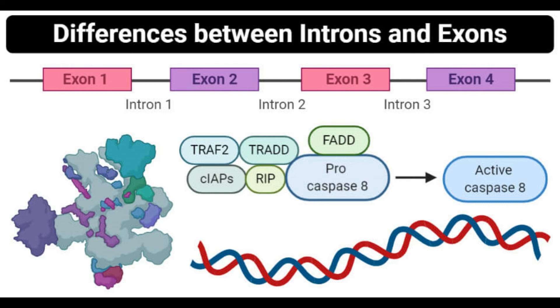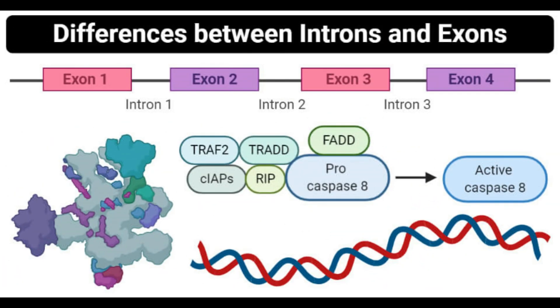By location in the DNA: introns are present between two exons in a DNA sequence, while exons are the sequences coding for proteins that are present between either the untranslated regions or two introns. By distribution: introns are found only in eukaryotic genomes, while exons are found in both eukaryotic and prokaryotic genomes. By location in the cell: introns remain in the nucleus after being spliced out from the mRNA transcript during RNA processing, while exons leave the nucleus to reach the cytoplasm after mature mRNA is synthesized.